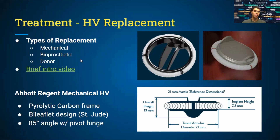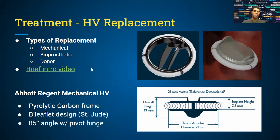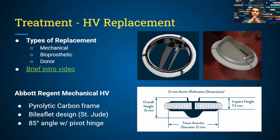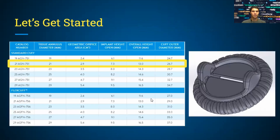Donor valves are taken from another donor. One popular mechanical heart valve is the Abbott Regent mechanical heart valve. Many designs follow a bileaflet design. Prior designs included the ball-and-cage design or a single leaflet design. The bileaflet design allows passage of blood by the folding of two leaflets — blood passes through, then the leaflets close to prevent regurgitation.